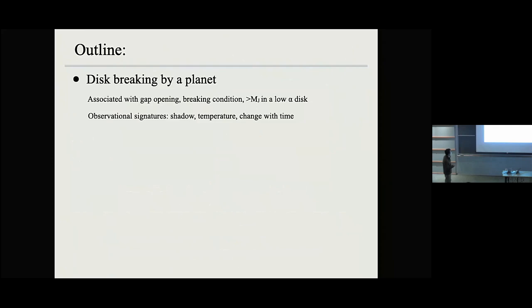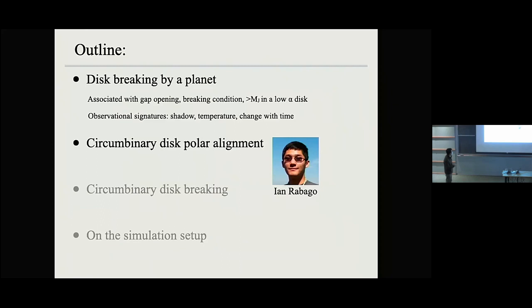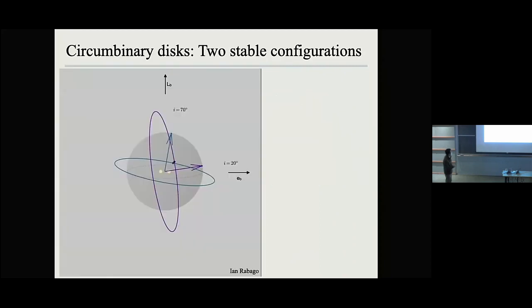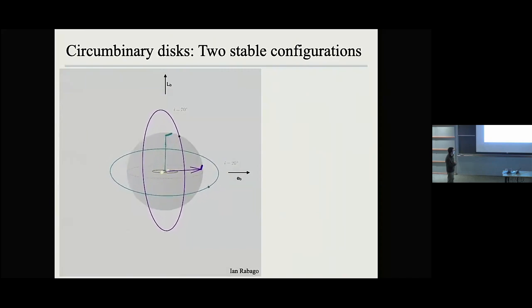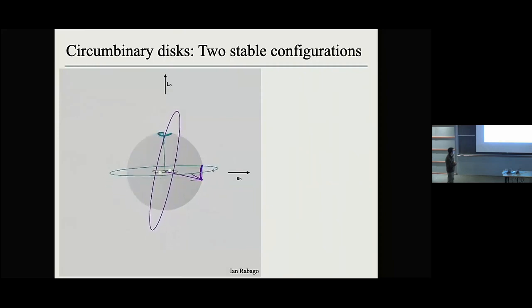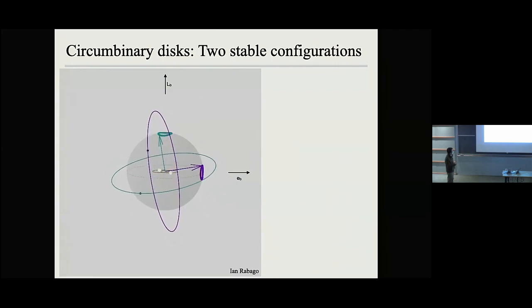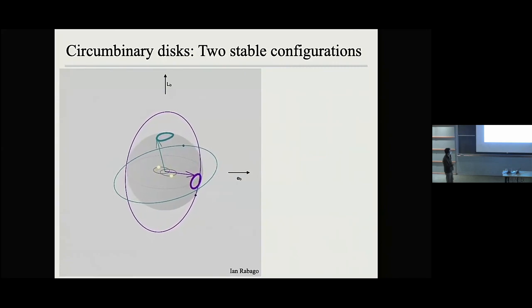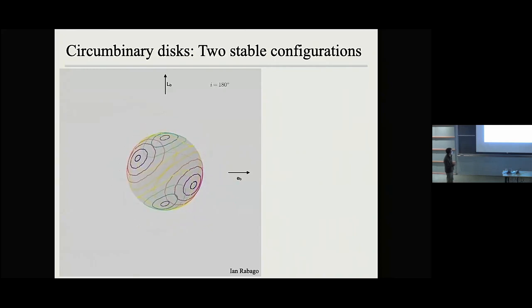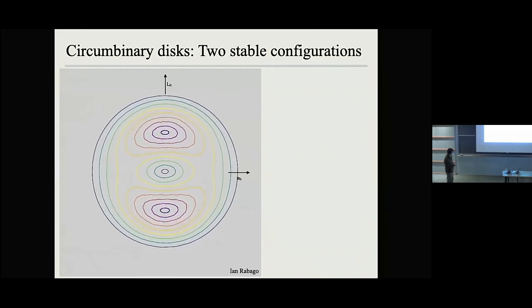That covers how to break a disk with a low-mass companion. Now I'll talk about breaking a disk from the central binary. But first, I'll talk about polar circumbinary disk simulations done by my graduate student, as Steve mentioned yesterday. You can have two stable orbits around an eccentric binary: one is the coplanar case where the disk precesses around the binary angular momentum vector, and another stable orbit is polar alignment, where the disk precesses around the eccentricity vector. You can map out different test particle orbits and produce a phase plot.